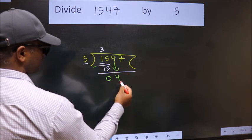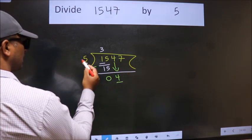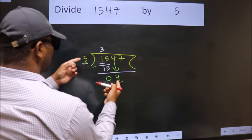So, 4 down. Now, here we have 4, here 5. 4 is smaller than 5.